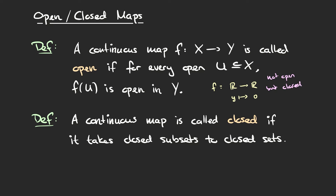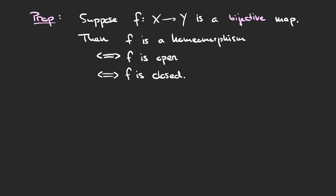We've defined the two properties of being open and closed that continuous maps can have, and now we're going to see when these properties coincide. This is the content of the following proposition: if f is a bijective continuous map, then the following are equivalent — f is a homeomorphism, f is open, and f is closed. What this proposition says is that being open and closed is the same provided the map is bijective, and moreover, if we have an open or closed map that is bijective, it's automatically a homeomorphism. This is useful because sometimes it's easier to check if a map is open or closed than to check it's a homeomorphism.